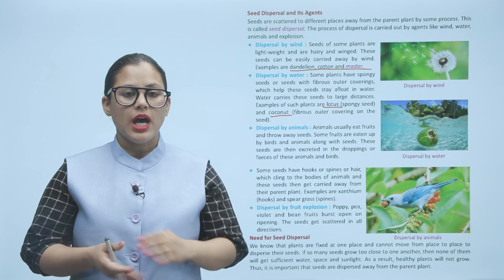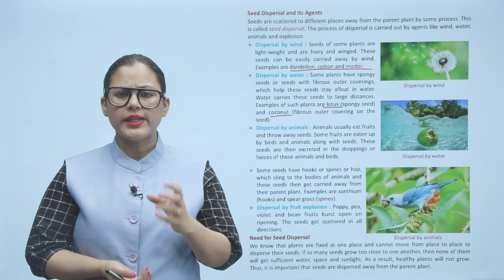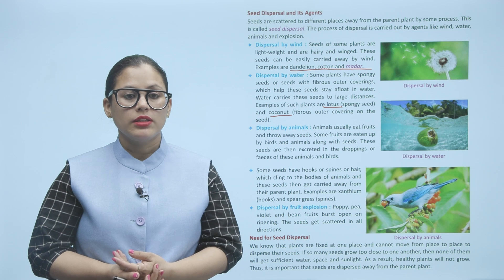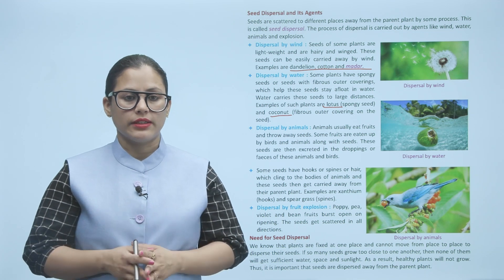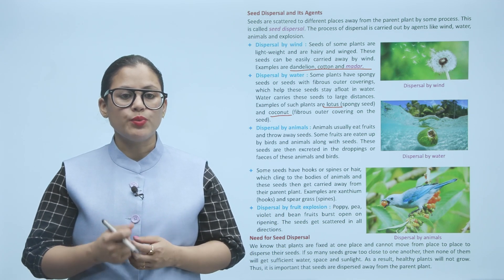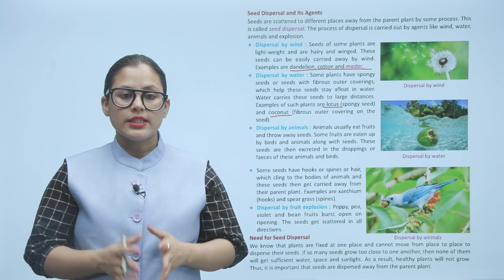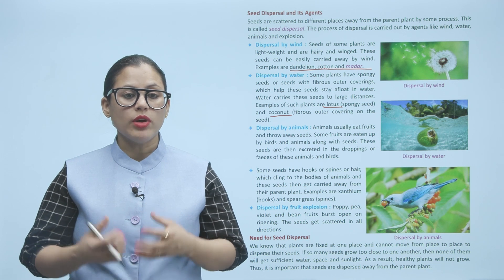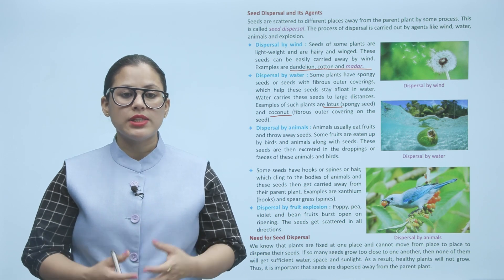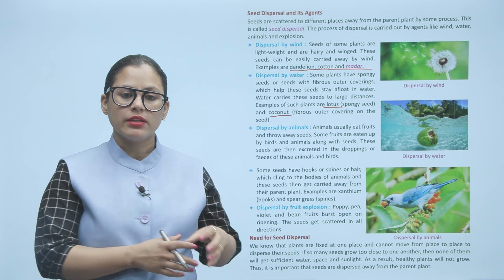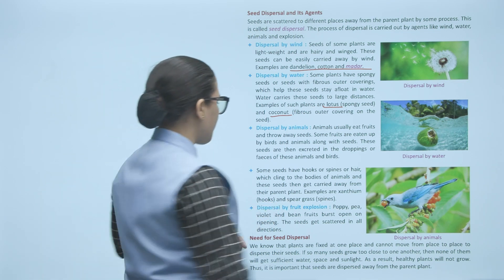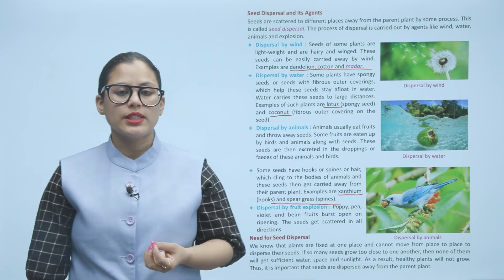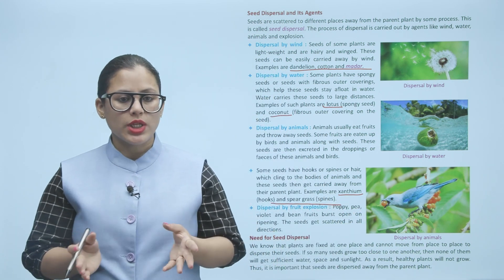These seeds then get carried away from their parent plant. Examples are xanthium with hooks and spear grass with spines. Dispersal by fruit explosion: Poppy, pea, violet, and bean fruits burst open on ripening. The seeds get scattered in all directions.